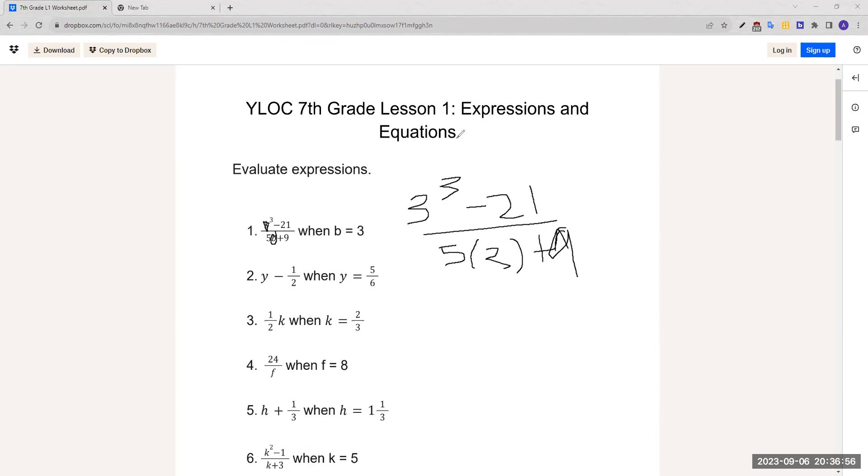3 cubed is the same as saying 3 times 3 times 3. 3 times 3 times 3 is 9 times 3, and 9 times 3 is 27. So that would be 27 minus 21. Now 5 times 3 plus 9. The parentheses means you multiply them together, so that would be 15 plus 9. So 27 minus 21 is 6 over 15 plus 9, which is 24.